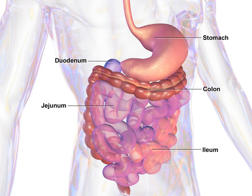The duodenum contains Brunner's glands which produce a mucus-rich alkaline secretion containing bicarbonate. These secretions, in combination with bicarbonate from the pancreas, neutralize the stomach acids contained in the chyme. The jejunum is the midsection of the small intestine, connecting the duodenum to the ileum. It is about 2.5 meters long and contains the circular folds, also known as plicae circulares, and villi that increase its surface area. Products of digestion — sugars, amino acids, and fatty acids — are absorbed into the bloodstream here.